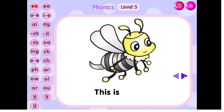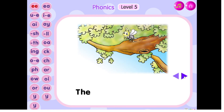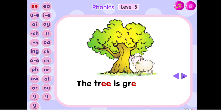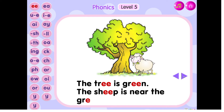This is a bee. The bee is on the tree. The tree is green. The sheep is near the green tree.